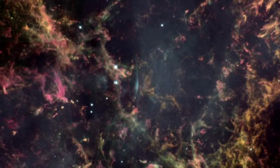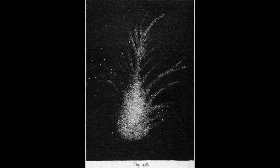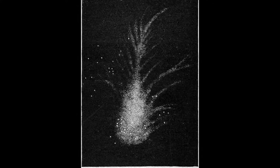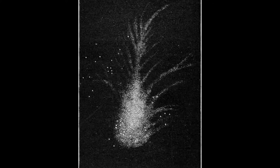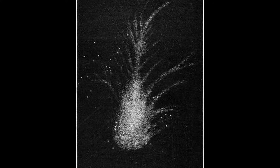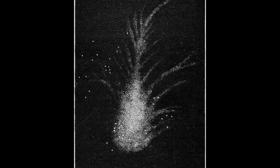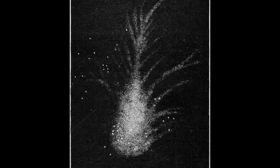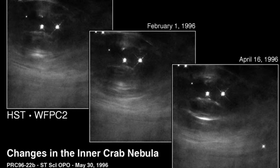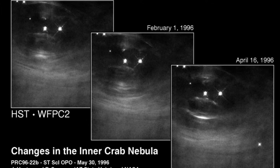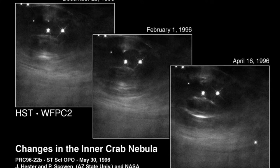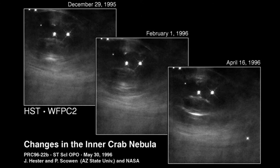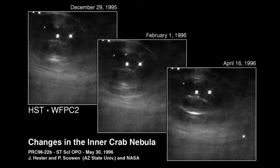We know that the Crab Nebula is the result of a supernova that exploded in the year 1054 because there are historical records describing an important astronomical event during that time. It was documented as a visible star during the day by Chinese and Arab astronomers on July 5, 1054, remaining visible for 22 months. Historical records from China, Japan, Korea, and other parts of the world describe a bright astronomical object visible to the naked eye in the night sky for several weeks in 1054 — described as a 'new star' or 'guest star' that appeared suddenly and was visible even during the day. Evidence shows the nebula is expanding at about 1,500 kilometers per second, and calculations based on this velocity indicate the explosion took place about 1,000 years ago, coinciding with historical records.